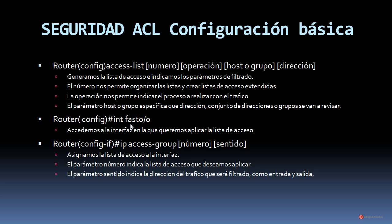La configuración de una lista de acceso para que sea efectiva consiste en dos pasos principales: primero, generar esa lista de acceso y, segundo, asignarla a una interfaz. El comando interface, por ejemplo FastEthernet 0/0, nos permite acceder a la interfaz. Una vez en la interfaz, ejecutamos el comando ip access-group, indicando el número de lista y el sentido. El parámetro sentido indica la dirección del tráfico que será filtrado, pudiendo utilizar entrada o salida. Esto quedará mucho más claro en el laboratorio práctico.